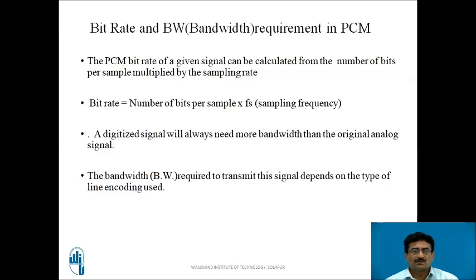The PCM bit rate can be calculated as: bit rate = number of bits per sample × sampling frequency (fs). A digitized signal will always need more bandwidth than the original analog signal. The bandwidth required depends on the type of line encoding used — such as NRZ-L, NRZ-M, return-to-bias, or biphase Manchester — so bandwidth varies accordingly.